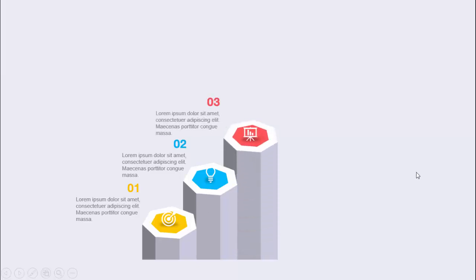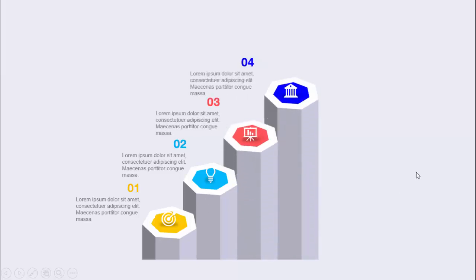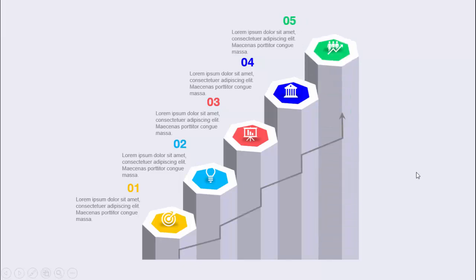Then comes the third, the fourth, and fifth. I've added an arrow which represents growth. I've also added some shadow or shade effect. I've created a few more slides with a small variation — I've just put the arrow mark something like this.